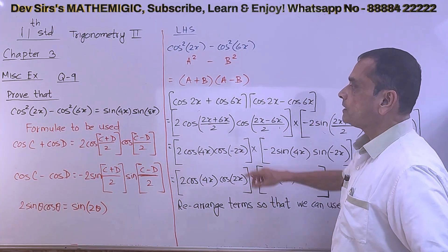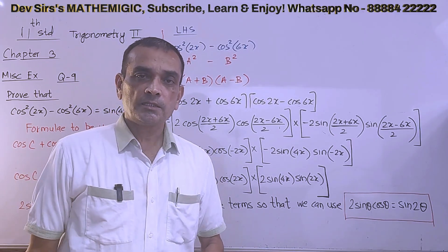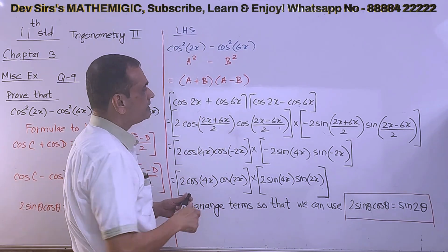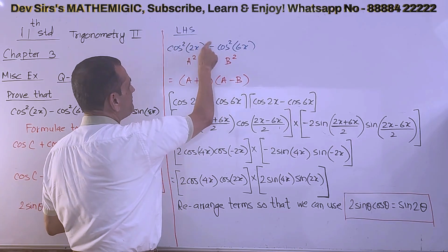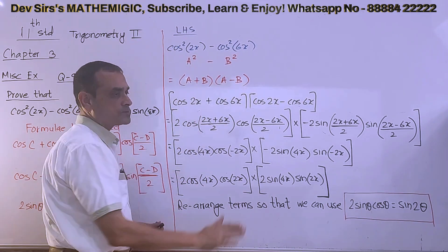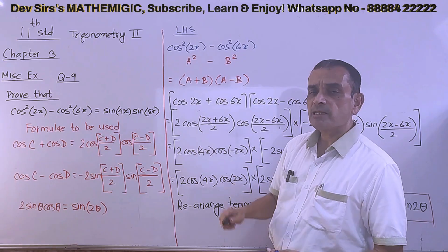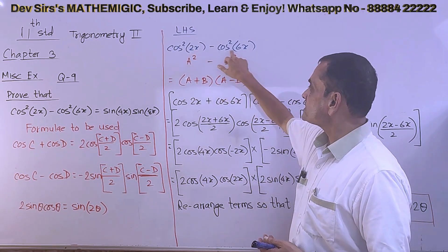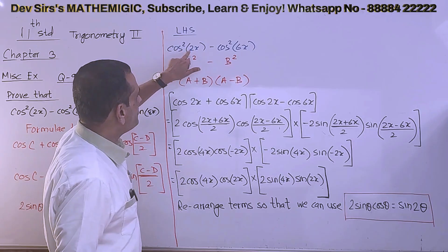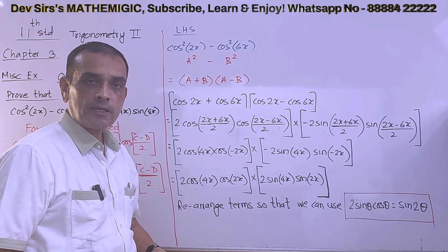Let us begin with the left-hand side: cos squared 2x minus cos squared 6x. First of all, there is no direct trigonometric formula to use here. I am going to use a squared minus b squared. This is your a, this is your b. So a squared minus b squared equals a plus b into a minus b — a basic algebra identity. That gives us cos 2x plus cos 6x, into cos 2x minus cos 6x.